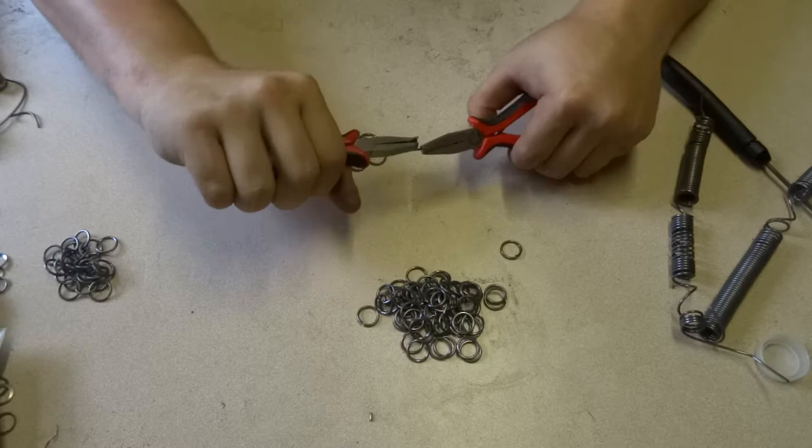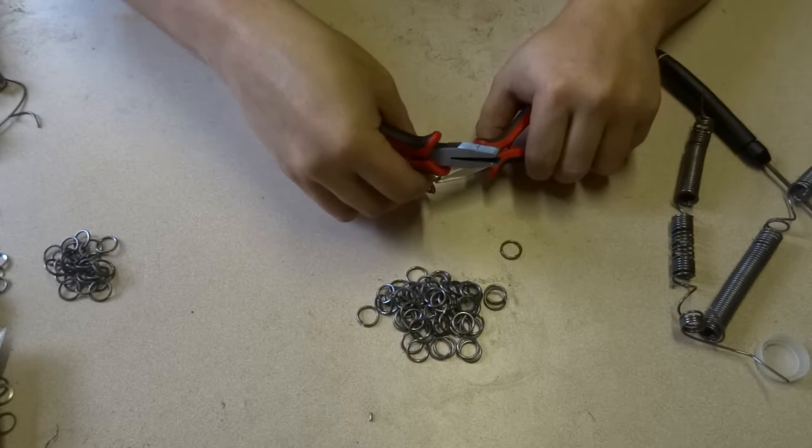To make one, you close four of the rings you just made, then open a ring, and put the four you just closed onto it.